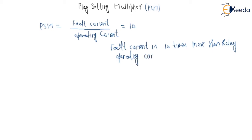It is clear that if the PSM is high, then the time would be very low, because PSM equals fault current divided by operating current. So if PSM is high, T would be less. Now we will elaborate this concept of fault current upon relay operating current.